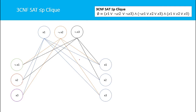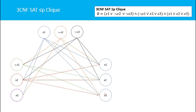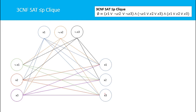I have now created edges for all literals in the first clause. For the remaining pending literals in the second clause, from ¬x1 I have already drawn to the first clause. Now I draw edges for x2 and x3. From x2 to x1, x2, and x3 in other clauses, and from x3 to x1, x2, and x3 as well. Now everything is complete — I have drawn enough edges to connect all literals across every clause.